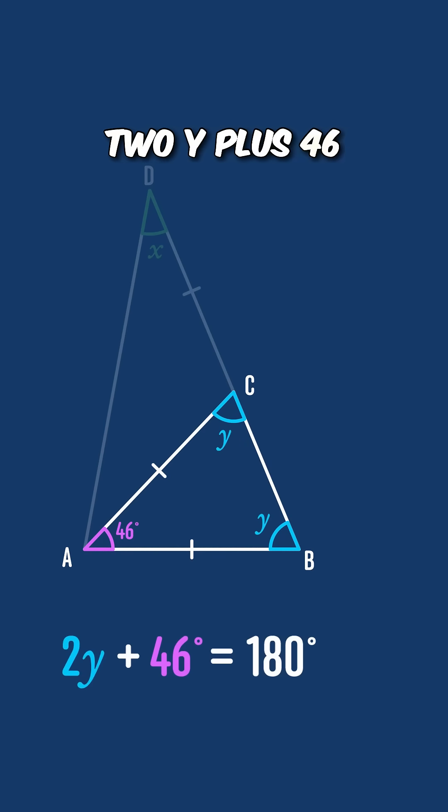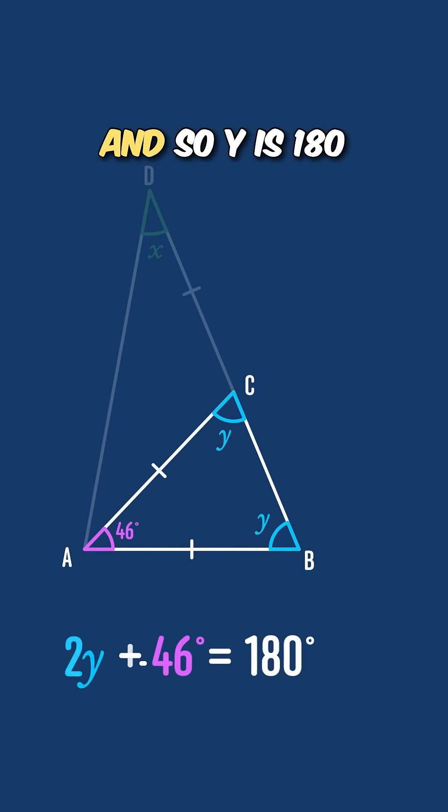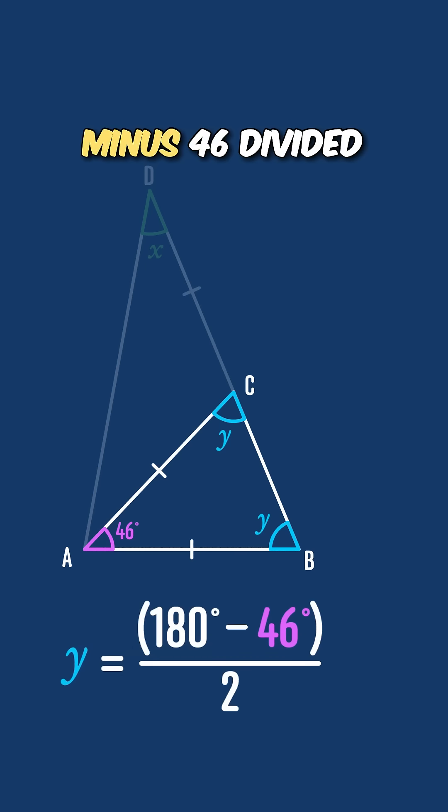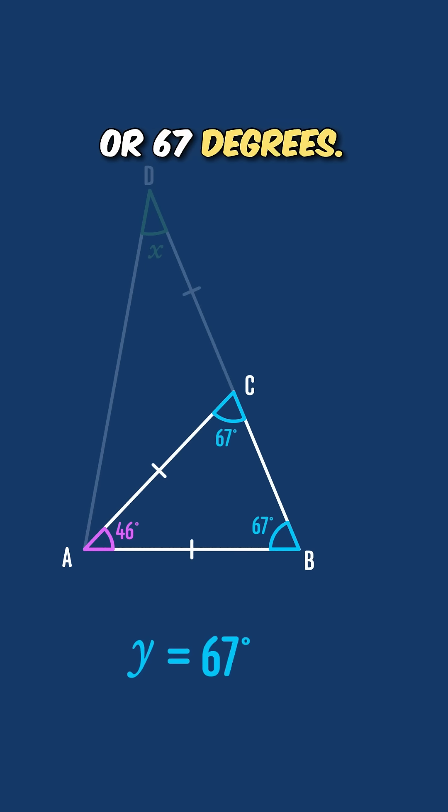Then we've got 2y plus 46 equals 180, and so y is 180 minus 46 divided by 2, which is 134 divided by 2, or 67 degrees.